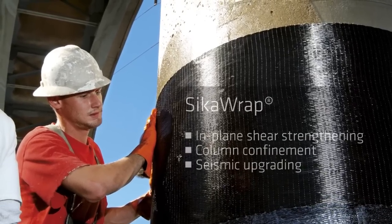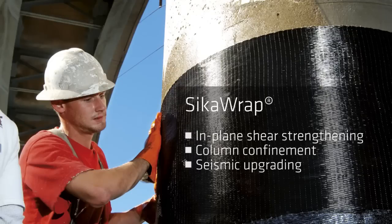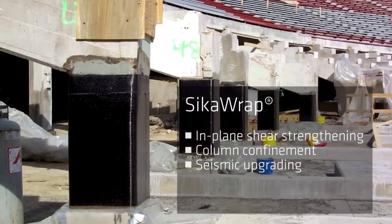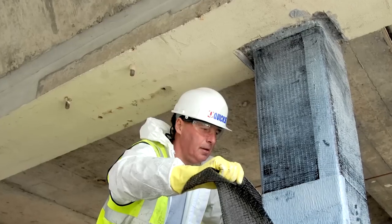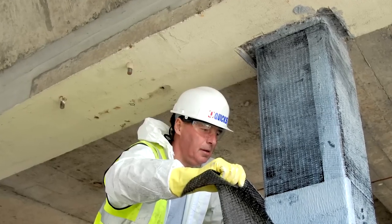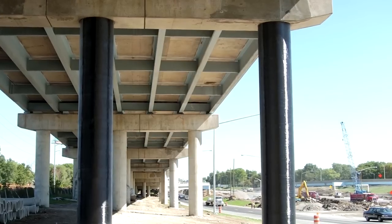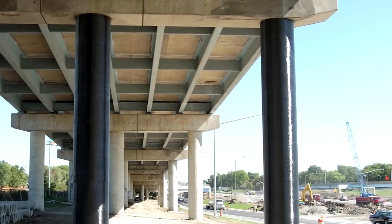One innovative Sika product is SikaWrap, a reinforcing fabric made of either carbon or glass fibers. SikaWrap is wrapped around columns and bonded to masonry walls, helping a building to withstand much higher earthquake loadings.